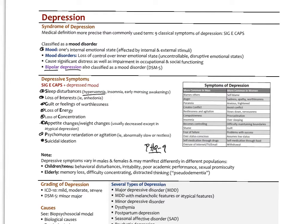One of the screening tools we use in the clinic is the PHQ-9, which is the screening tool for depression and major depressive disorder. It's a form the patient fills out asking each of the SIGI CAPS questions. In addition to depressed mood, these symptoms need to be present. Major depressive disorder requires more of these symptoms than minor depressive disorder.